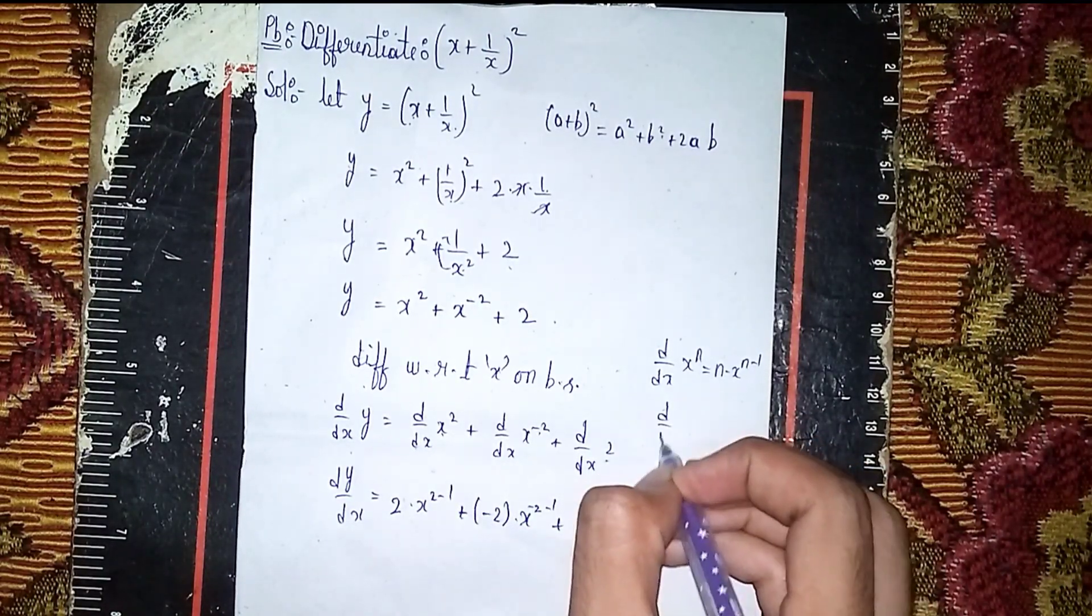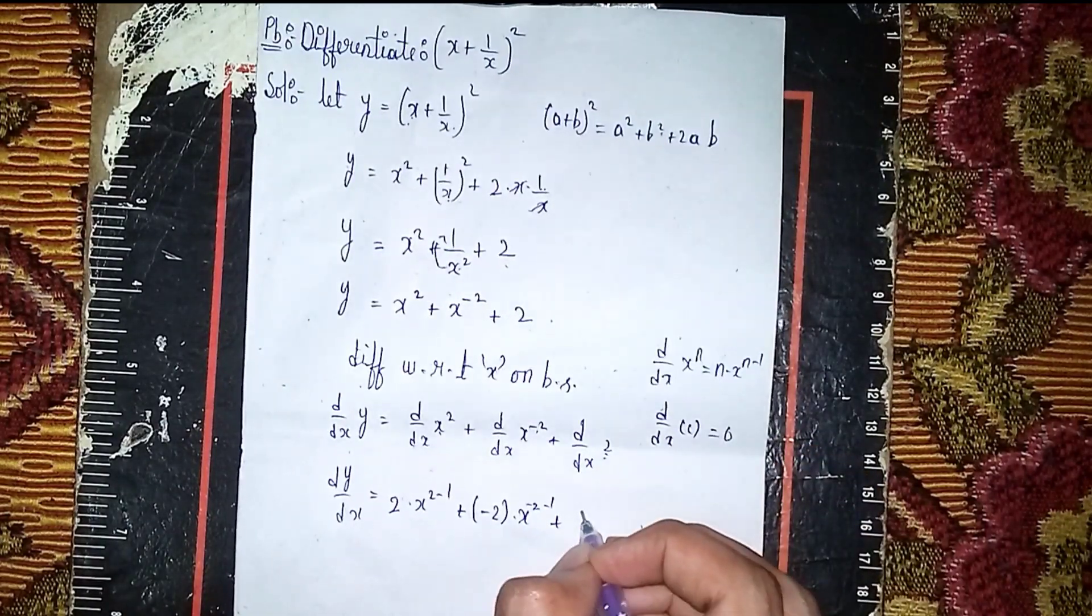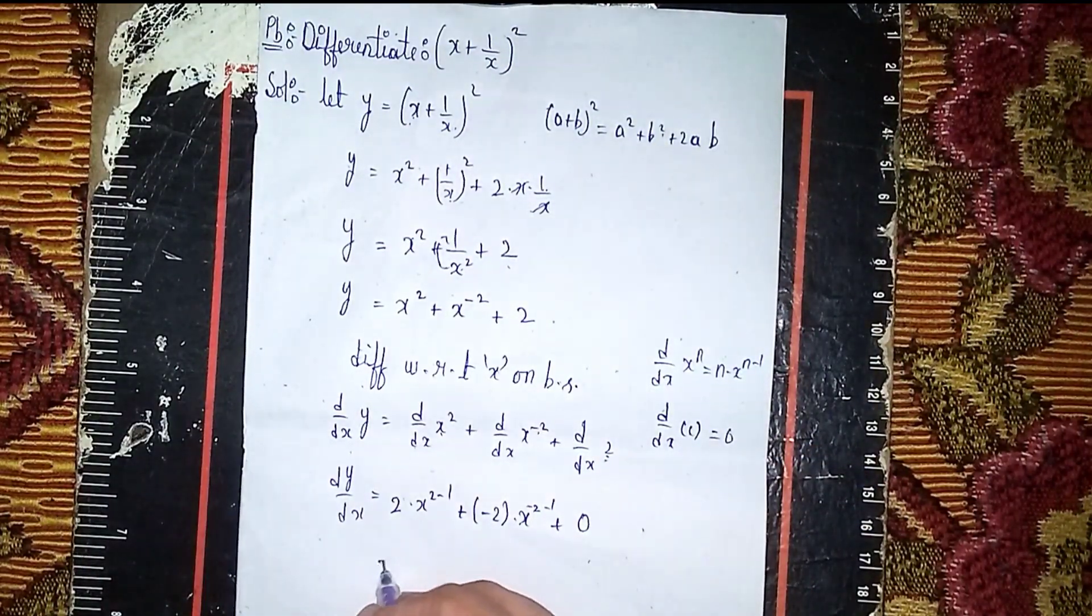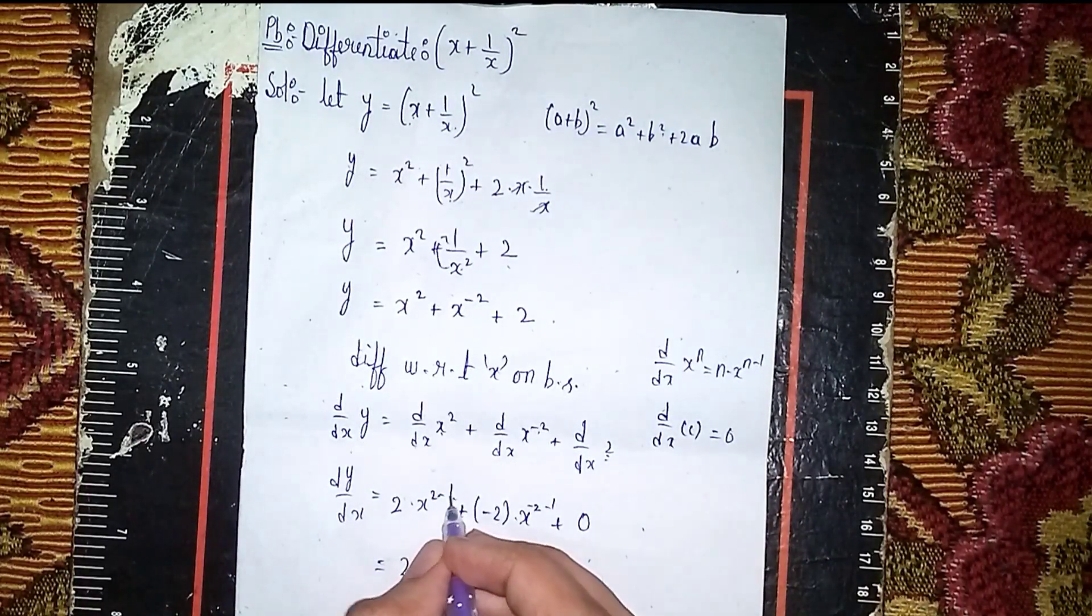Then plus, now d/dx of any constant equals 0. So it becomes 2x. 2 minus 1 is 1 only, so x^1 is just x.